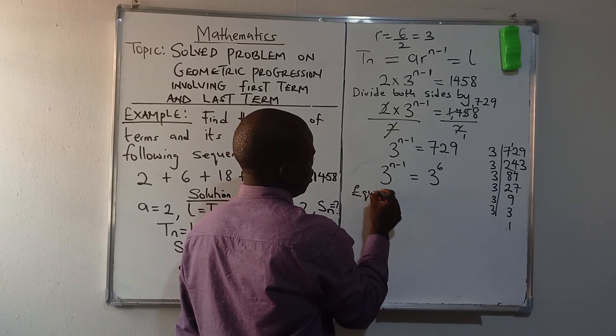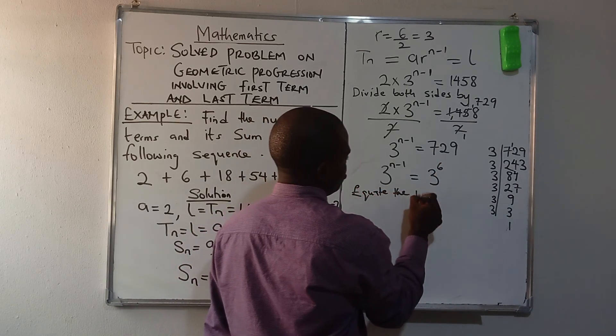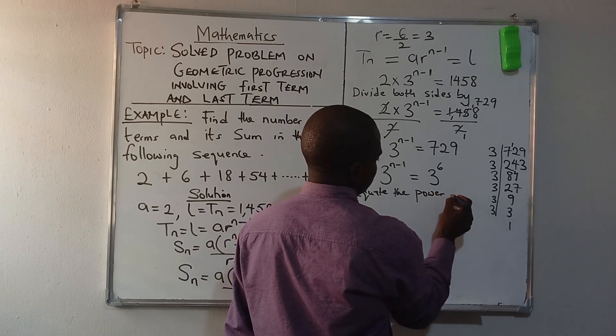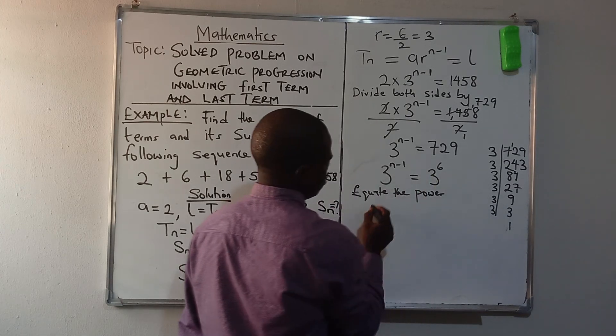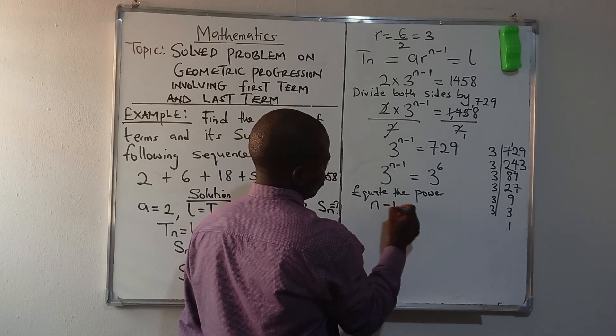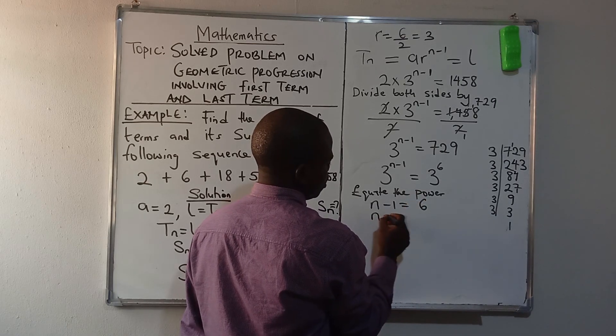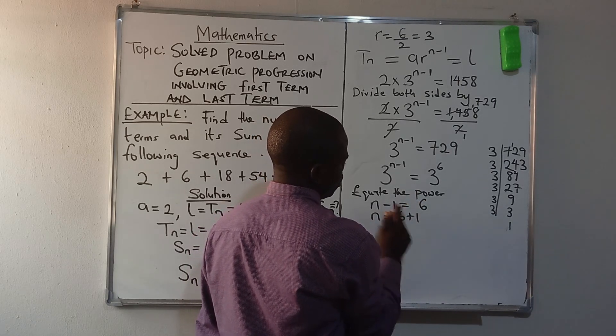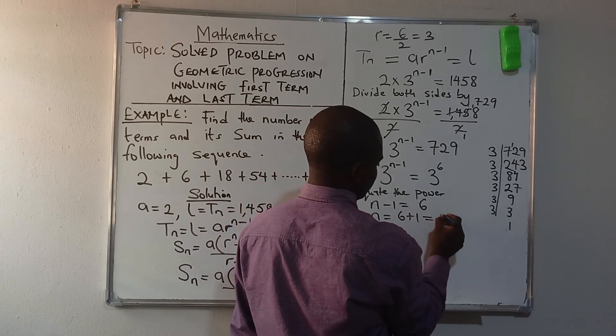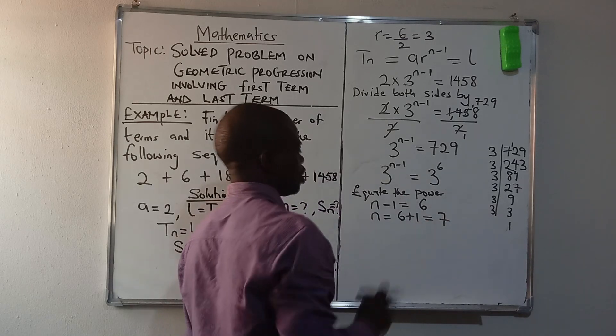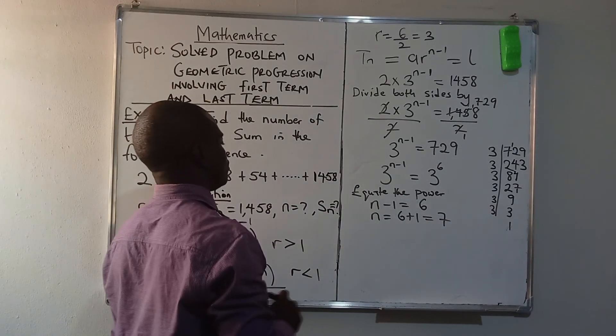We can now equate the powers since the base is the same. N minus 1 equals 6. Collect the right term: N equals 6 plus 1. Negative 1 turns to positive when it crosses. N = 7. The number of terms is 7.